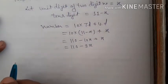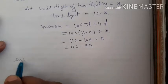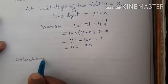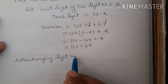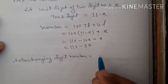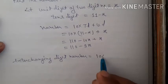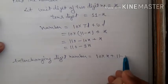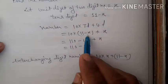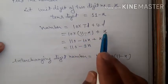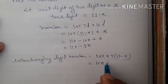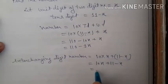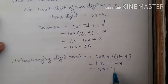Now find the reversed digit number. After interchanging, the interchanging digit number equals 10 into x plus (11 minus x), because the tens digit and units digit are swapped. This comes out to 10x plus 11 minus x, which equals 9x plus 11. This is the new number after interchanging.